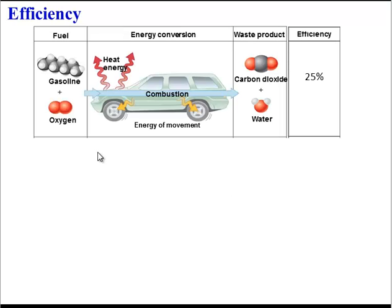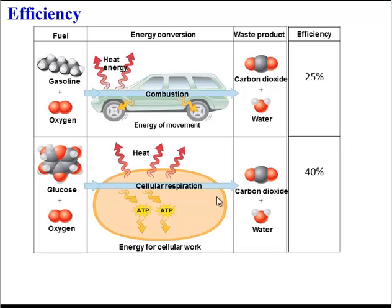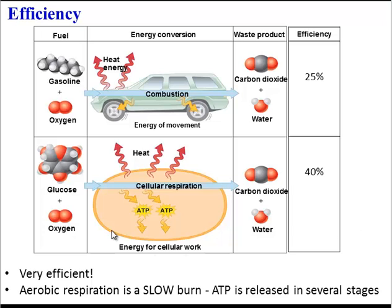How efficient is this process? Let's compare it to a car burning gasoline. Gasoline is a fuel, kind of like sugar, and it's burned in the presence of oxygen. Some of the energy given off is used to move the car, but a lot is wasted as heat — in fact, 75% is wasted, and only 25% is actually harnessed. In contrast, in cellular respiration, when glucose is burned in the presence of oxygen, 40% of that energy becomes ATP, which cells can use for work. The other 60% is lost as heat. But still, it's a pretty efficient process, because unlike burning gasoline, cellular respiration is a slow burn — there are lots of steps that allow a lot of ATP to be released.